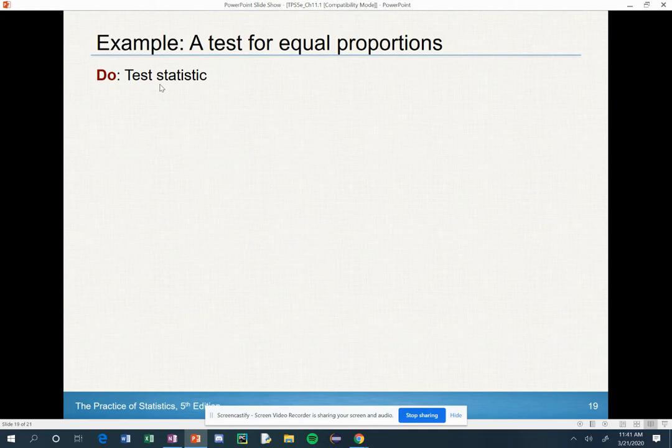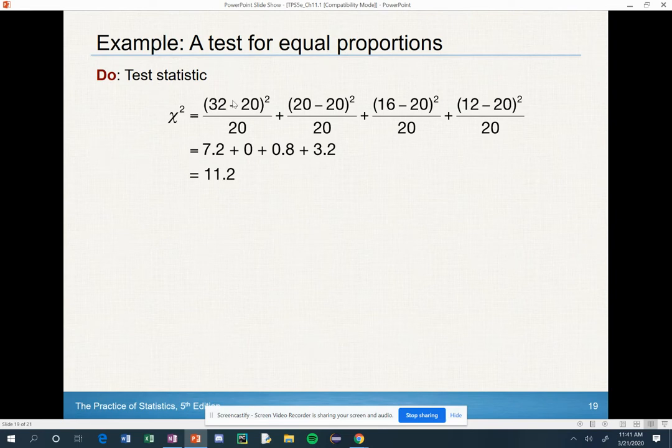There's a few things we're going to report here. We're going to report a sketch, degrees of freedom, the p-value, and the p-value is really coming from our test statistic. The test statistic is coming from that formula: the observed minus the expected squared divided by the expected.